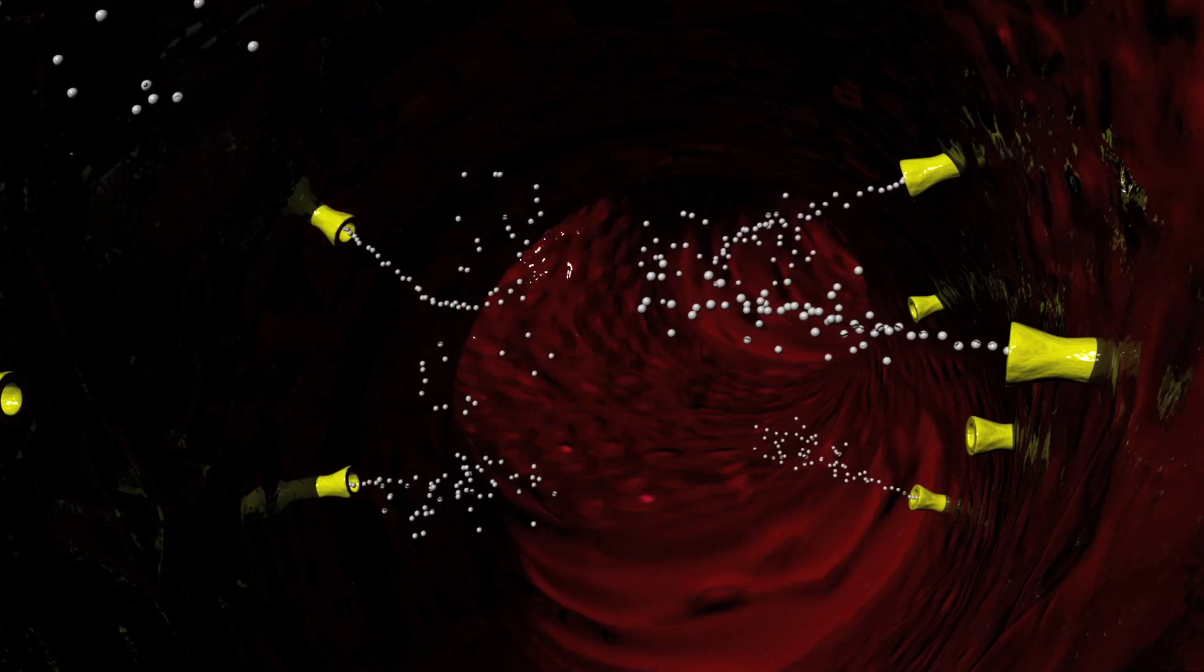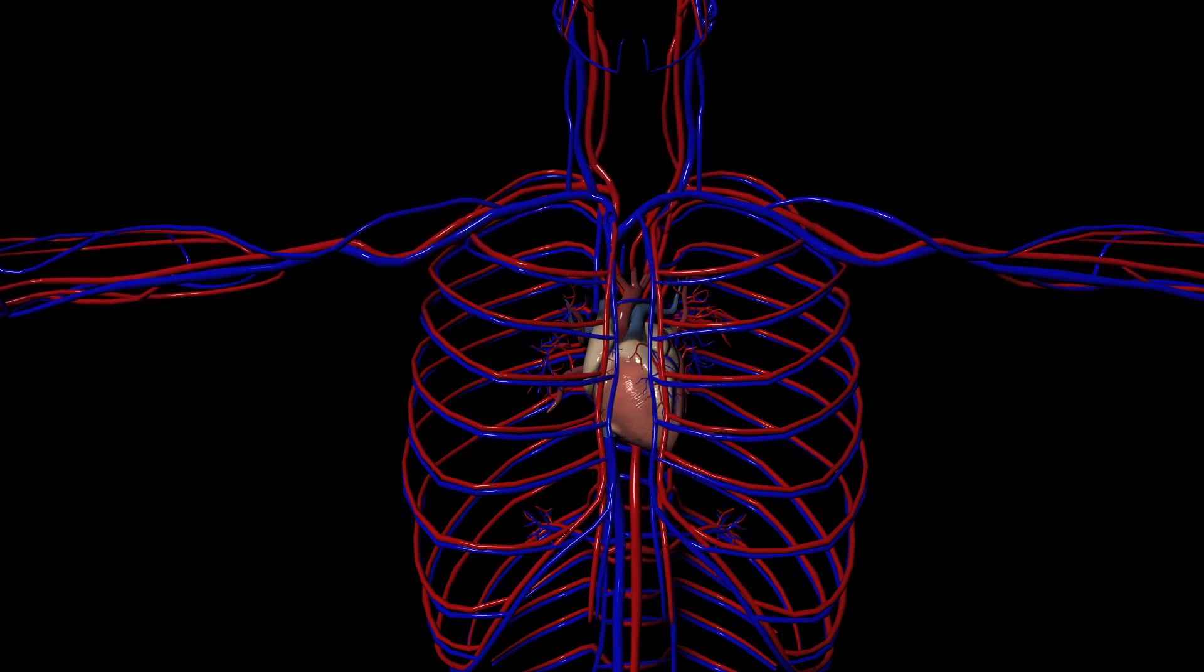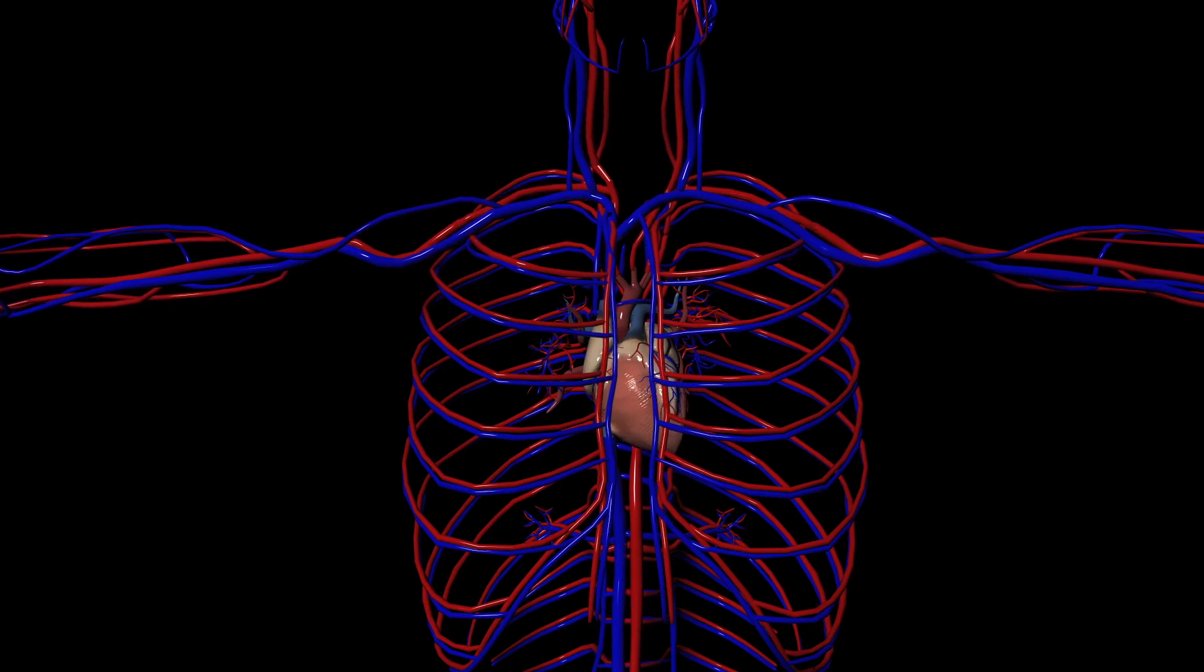When excessive calcium causes the heart to beat too fast and the blood vessels to tighten, we can correct this with calcium channel blockers. Let's see how they work.